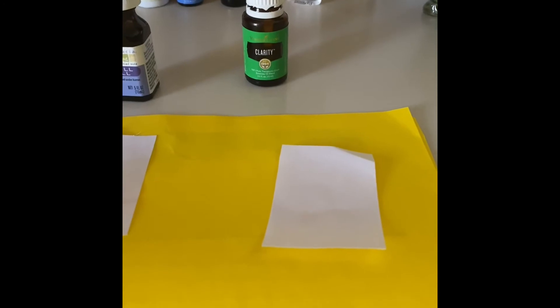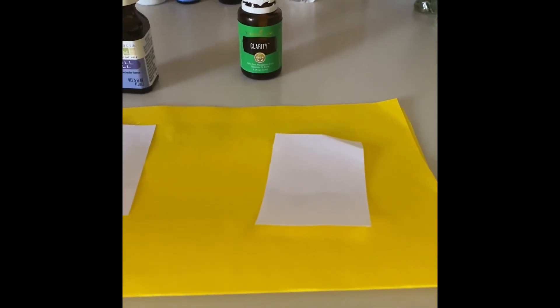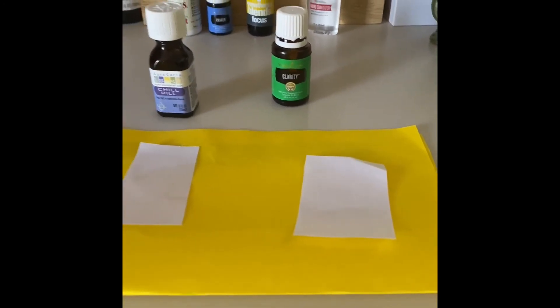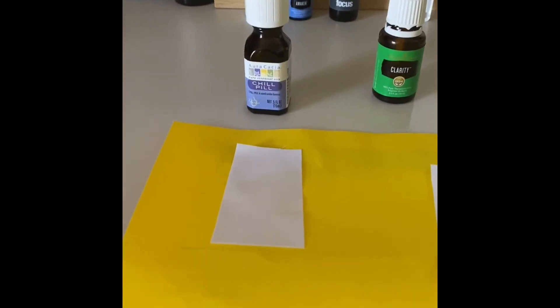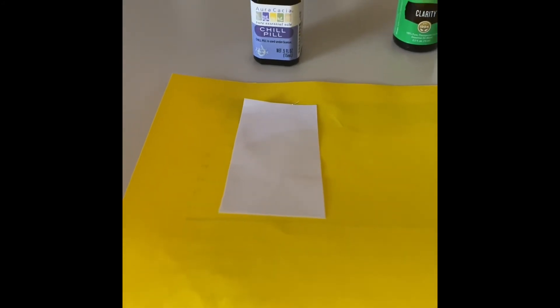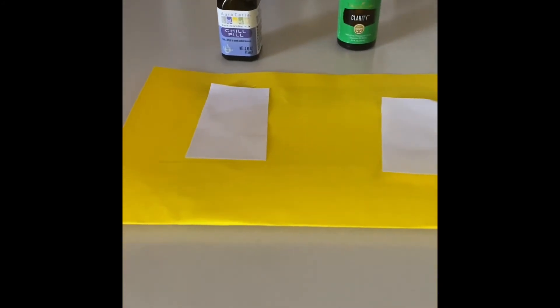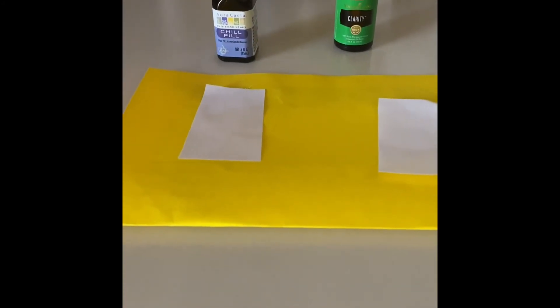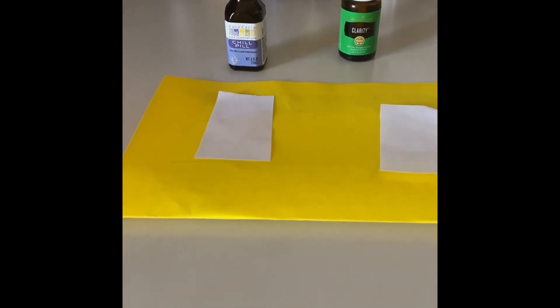Now let's take a look at the Aracacia brand. As you can see on the paper, there is a ring left on the paper. That tells us that this Chill Pill essential oil has been diluted with some sort of substance that unfortunately takes away from the purity of the essential oil.